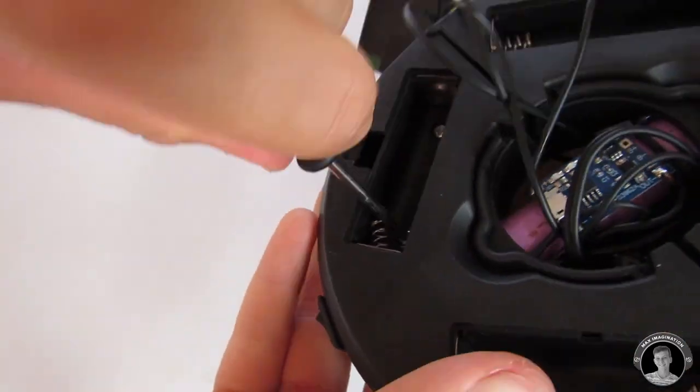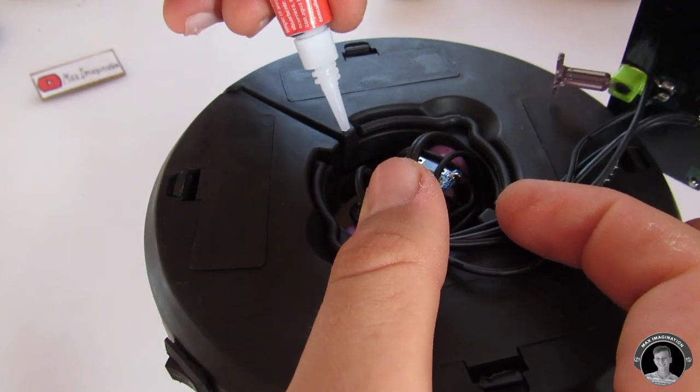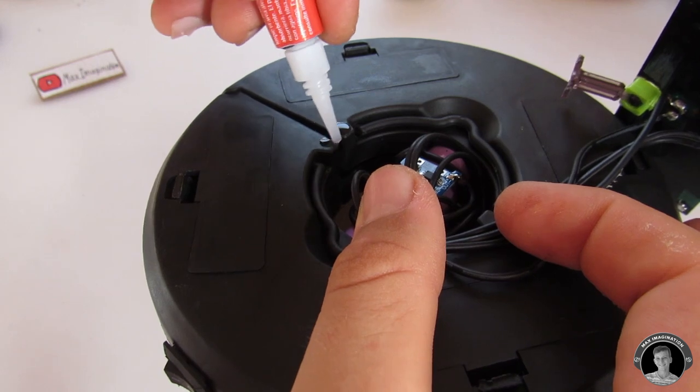And the last thing we need to do in order to finish this lamp is just glue the solar panel on and glue on some sort of cover so that water doesn't seep in through the top.